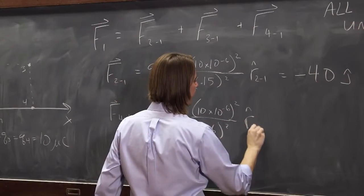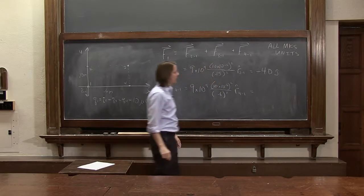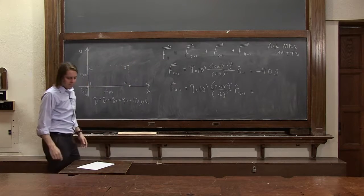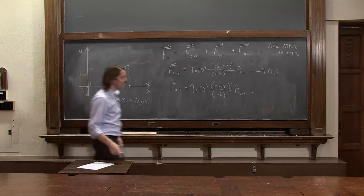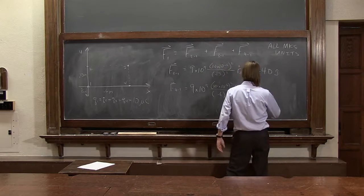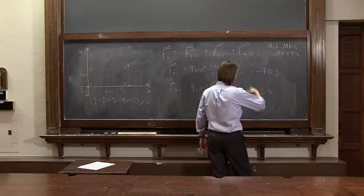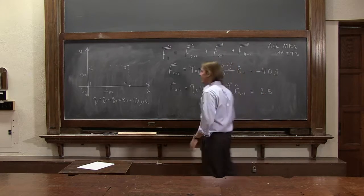And it's R hat 4,1. So if you work all that out, you get 2.5 is the magnitude. 2.5 Newtons, I'm just not writing it that way. And this one, its unit vector, 4,1, looks like that.